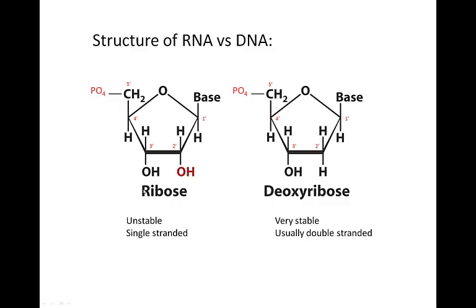If you compare the molecules of RNA versus DNA, there are a couple of minor differences. What you see here are the sugars used in RNA versus DNA. RNA uses ribose, and ribose differs from deoxyribose in that it has an OH on the 2' carbon. Deoxyribose does not have this, and this small difference makes RNA much less stable compared to DNA, and it usually prefers to remain single-stranded instead of forming the double helix that deoxyribose will form.